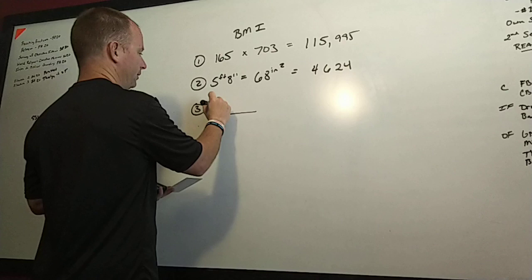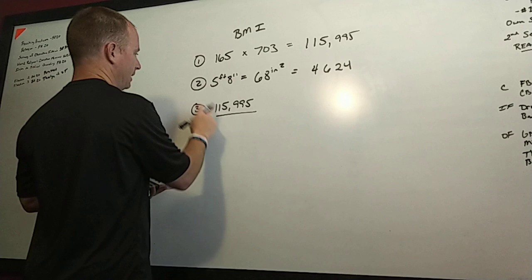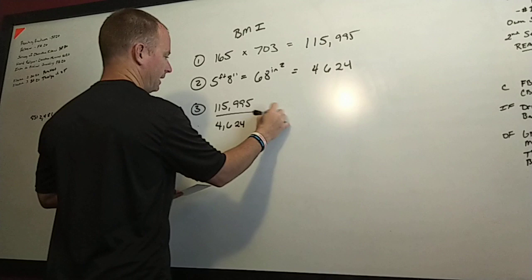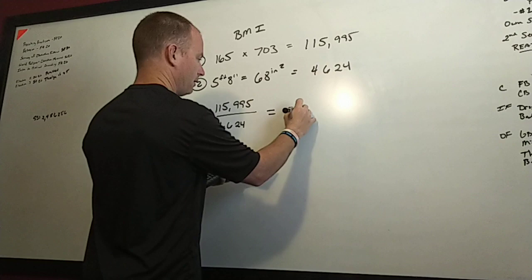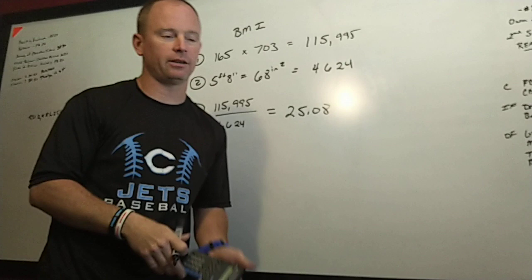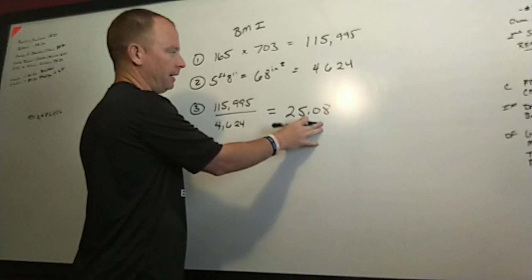Step three is we're going to take answer number one and divide it by answer number two. So 115,995, answer for number one, divided by answer for number two, which was 4,624, and that's going to equal our BMI. 115,995 divided by 4,624 equals 25.08. That would be my own personal BMI. You can go back in the lecture notes and it shows you a scale of how they evaluate what this score means.